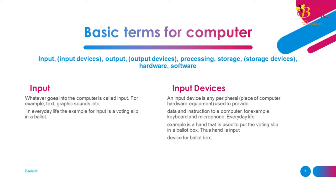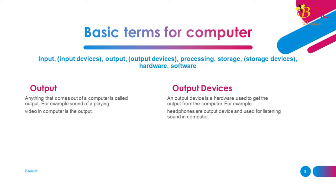Output: Anything that comes out of a computer is called output. For example, the sound of a playing video in a computer is the output. Output Devices: An output device is hardware used to get the output from the computer. For example, headphones are an output device used for listening to sound in a computer.